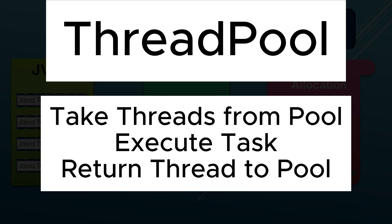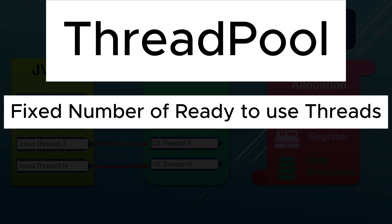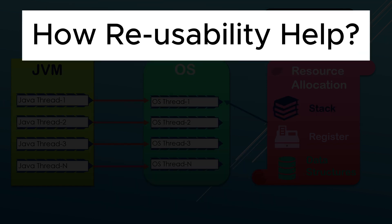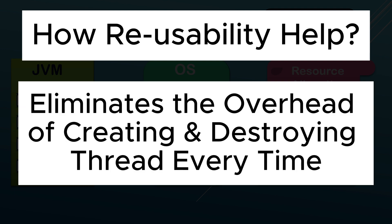In a thread pool, we have a fixed number of ready-to-use threads available, which are taken by the program for parallel task processing. Once the processing is done, the threads return to the pool so that other programs can reuse them within that application. The term reuse is very important here — threads are reused again and again, so the overhead of creating and destroying threads every time is completely eliminated. Threads are only created once the pool is built and destroyed when the pool is destroyed.